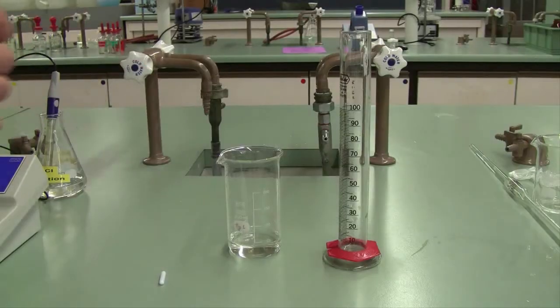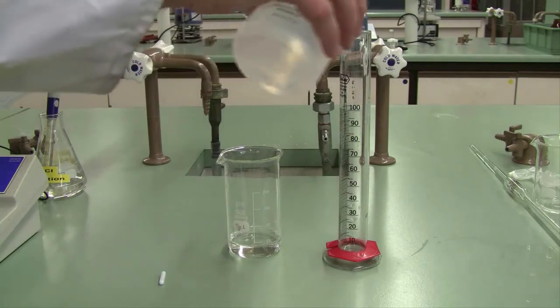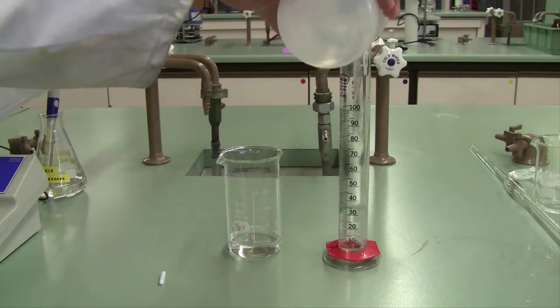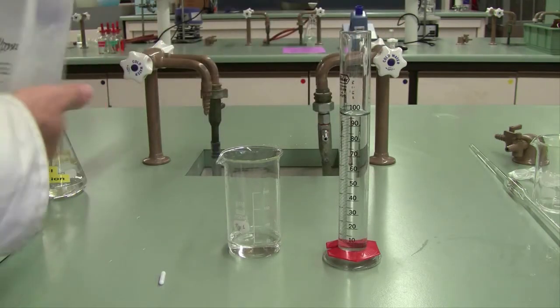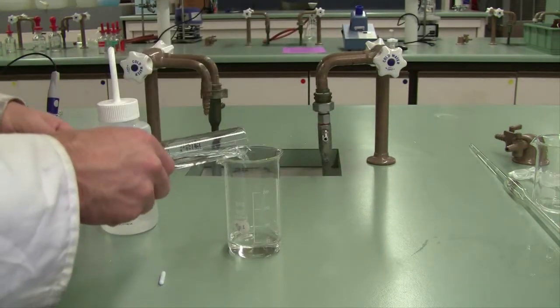Then using a measuring cylinder, add approximately 100 ml of distilled water to that ammonia. This isn't to dilute the solution, it's to bulk it up to ensure that your pH electrode is covered at all times. The addition of this water will not affect the number of moles of ammonia in your sample.